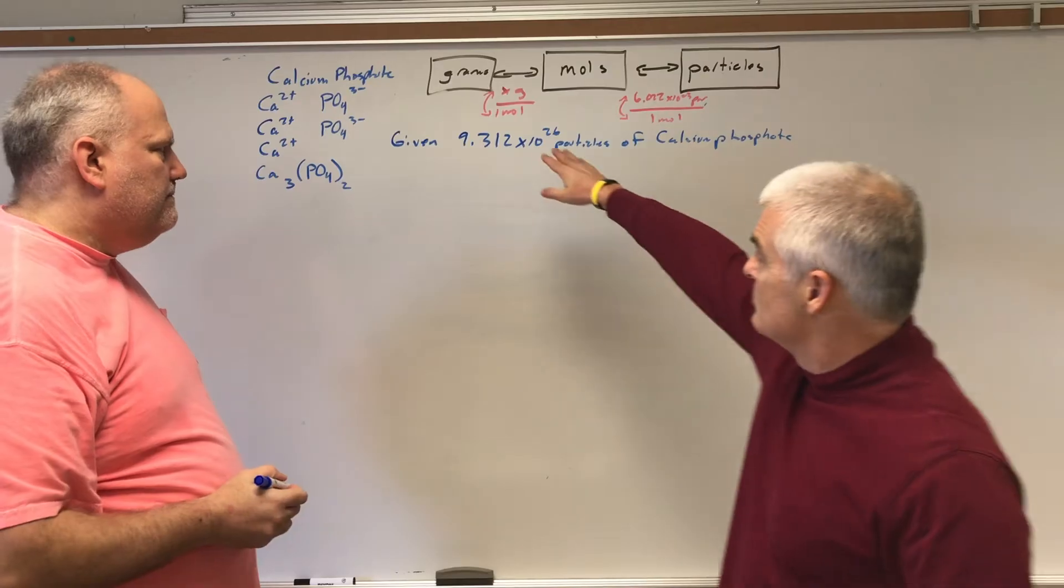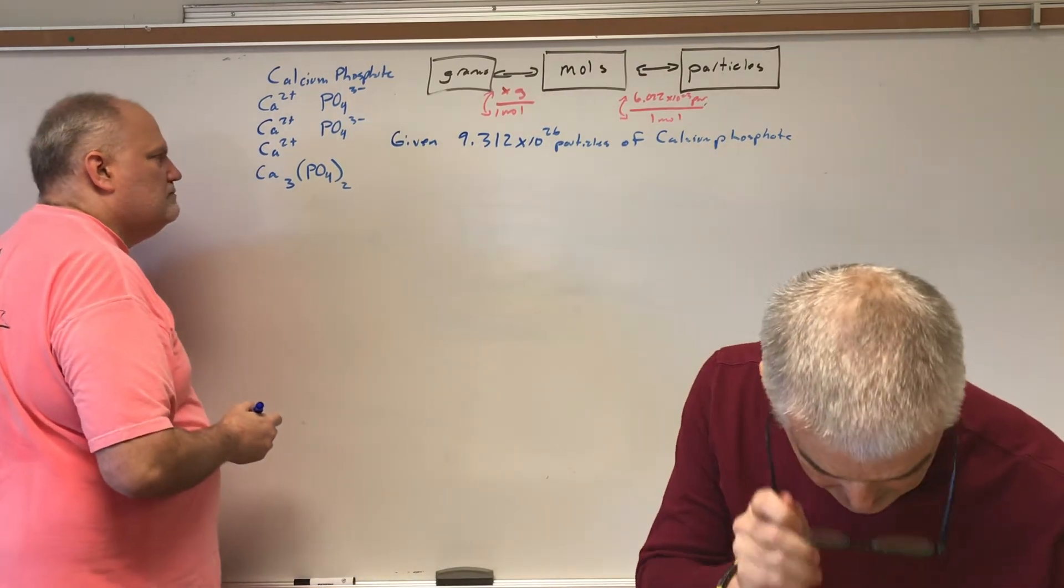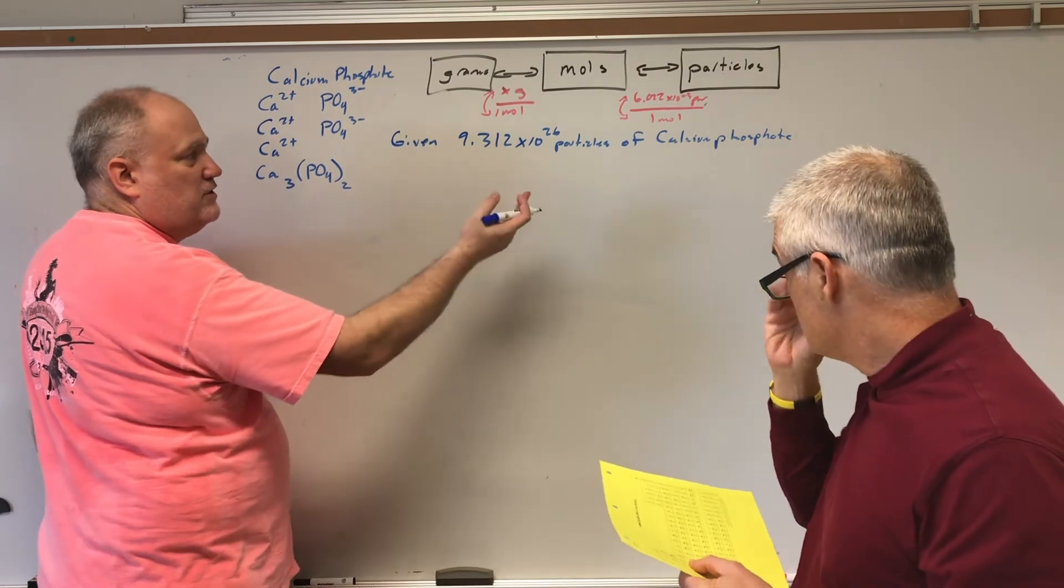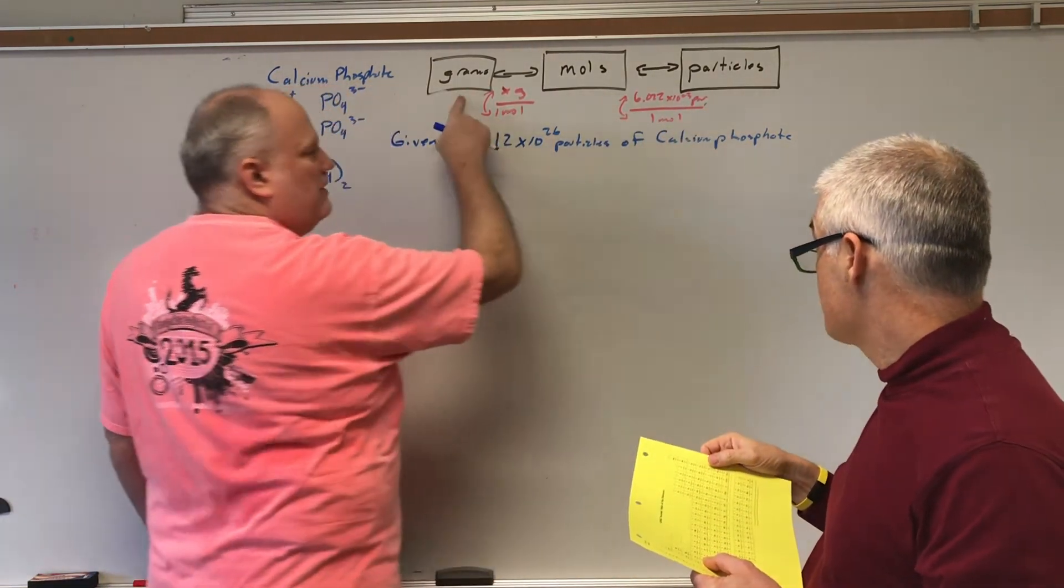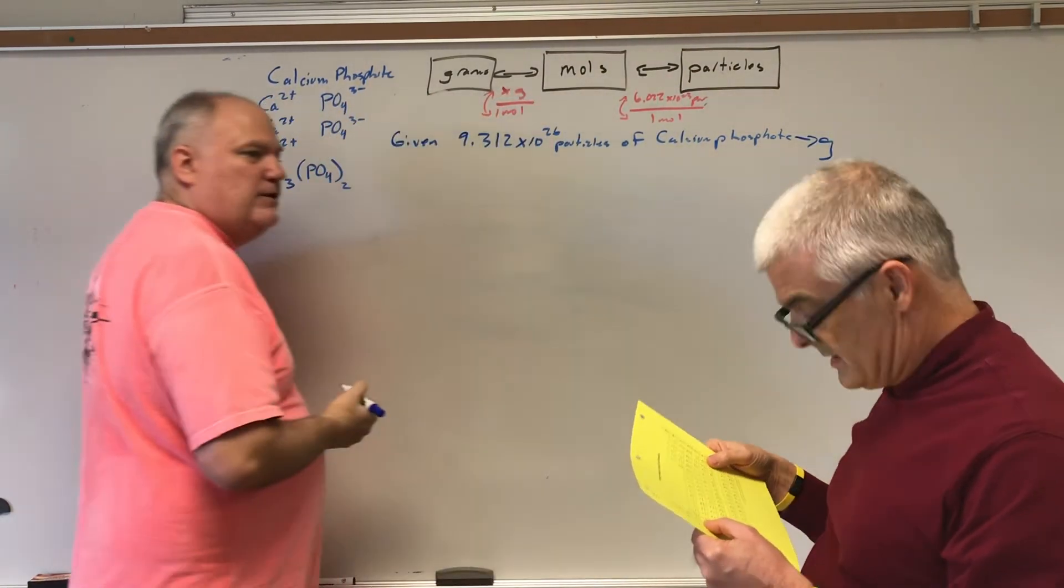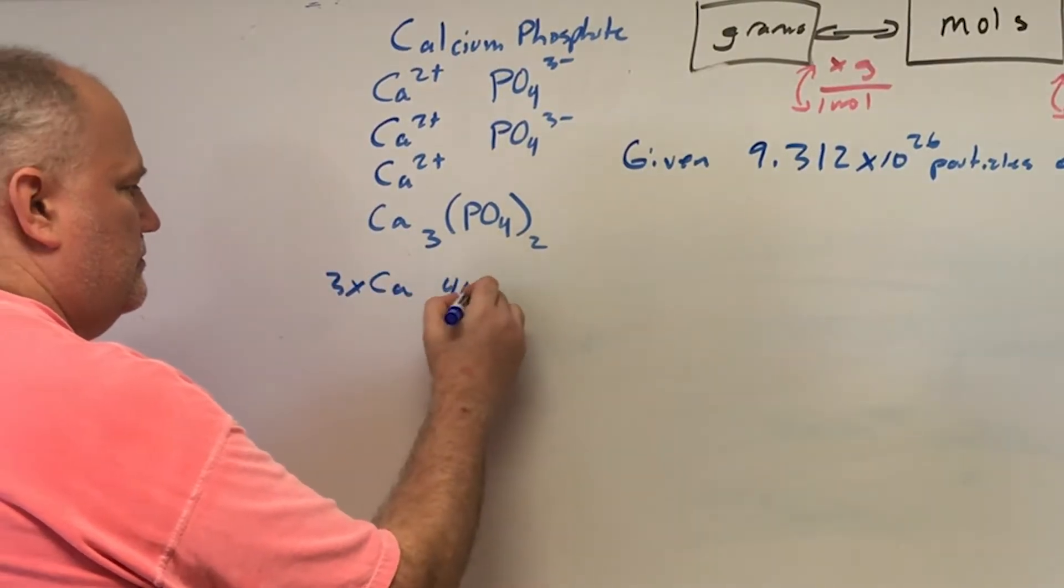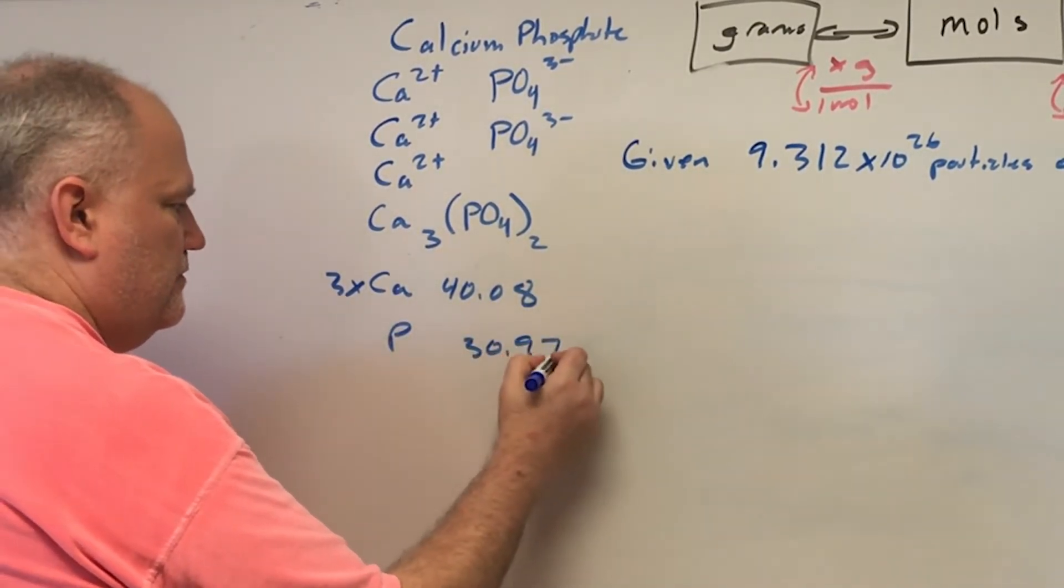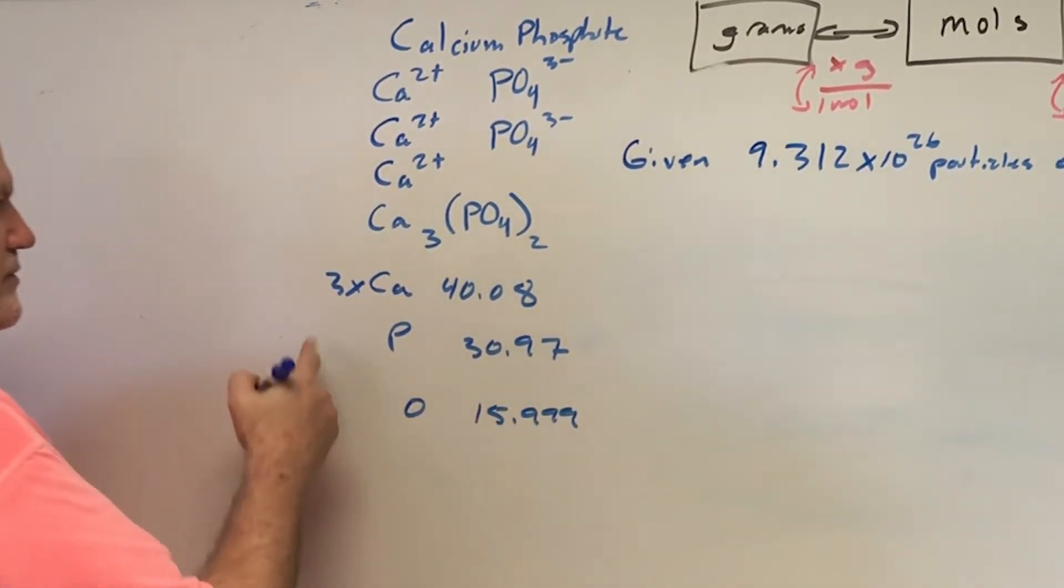Now we need to find this number because ultimately we need this. So calcium is 40.08. Phosphorus is 30.97. And we know oxygen is 15.999. On my calculator, I'm going to add those up or multiply. There's two phosphoruses because that two is multiplied by this. Are there eight oxygens here? Yeah, there's eight oxygens and two phosphors.